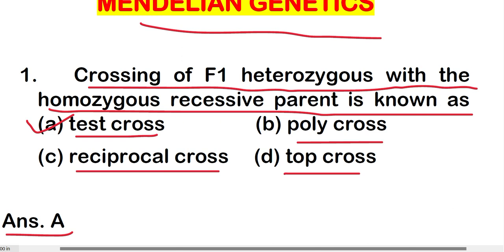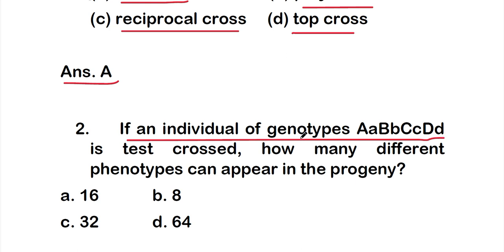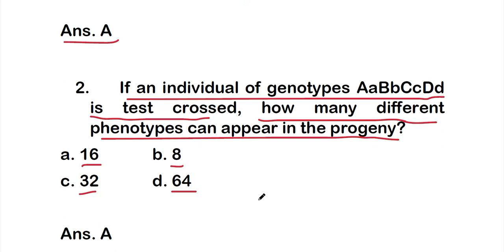Moving on to question two: if an individual of genotype AaBbCcDd is test crossed, how many different phenotypes can appear in the progeny? Options are: option A: 16, option B: 8, option C: 32, or option D: 64. The right answer is option A, that is 16 different phenotypes.